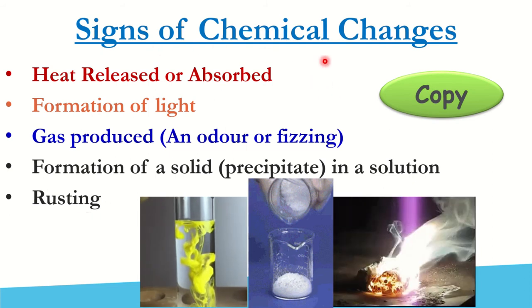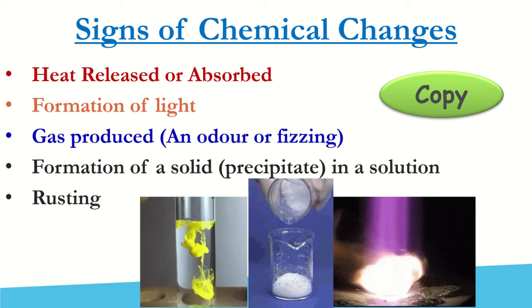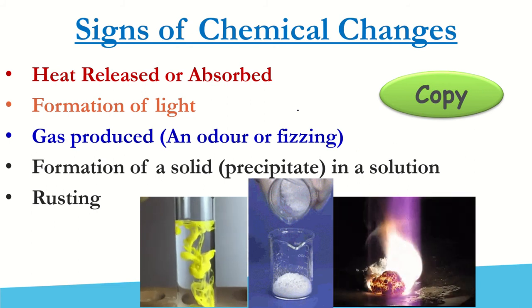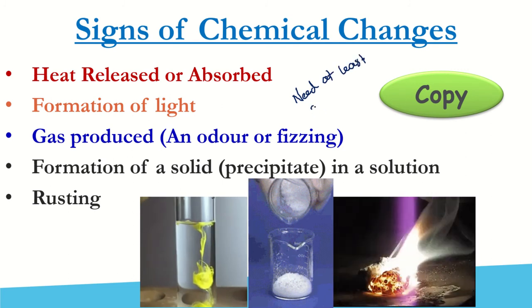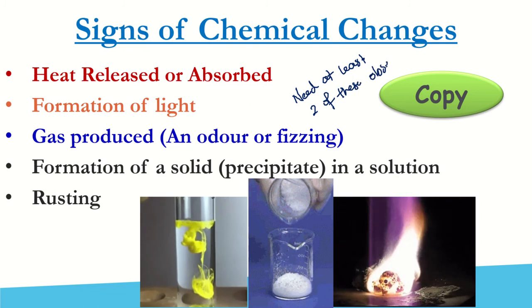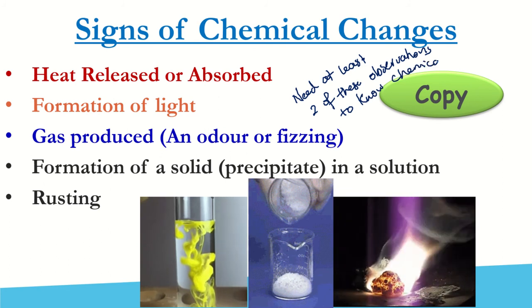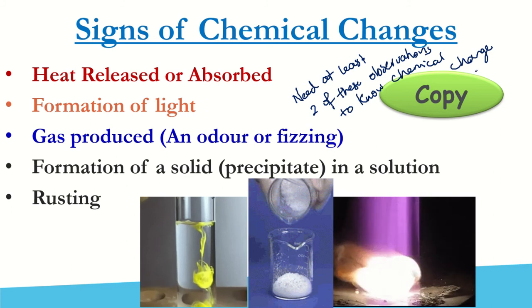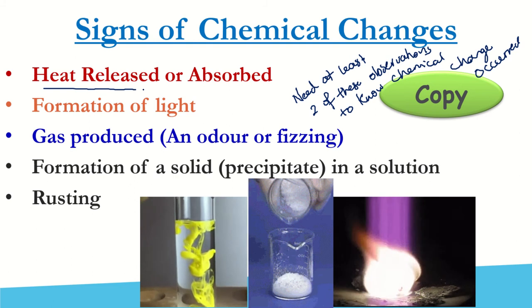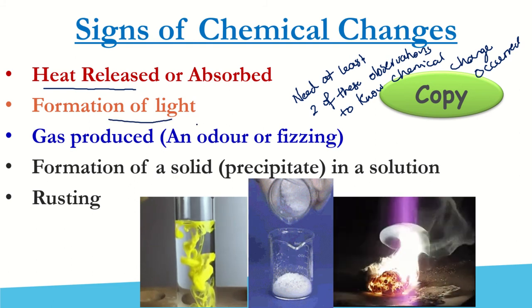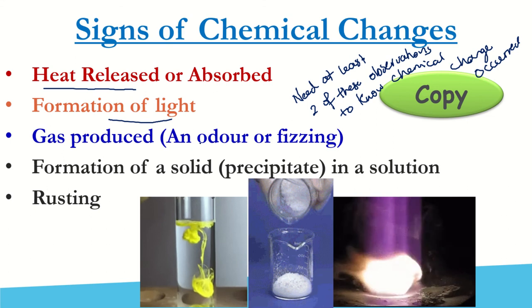Obviously, the key point to this is you need at least two or more components to really know if it's a chemical change. So you need at least two of these observations to know if a chemical reaction has occurred, or chemical change occurred. More so, as you can see with the interpretation, I could have boiling water, and that's a release in heat. I can turn on the light, that could be a formation of light. So you do need at least two of these observations to give you sort of a better understanding that a chemical change has occurred.